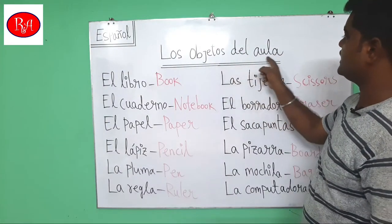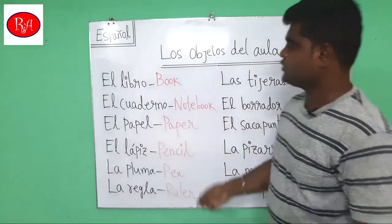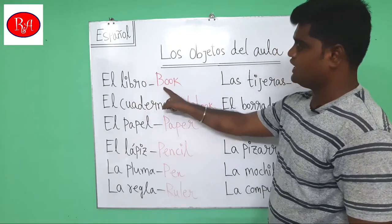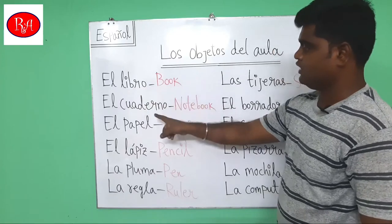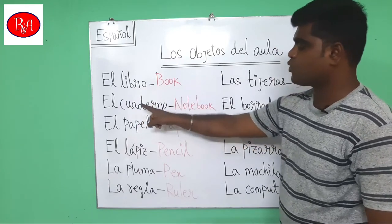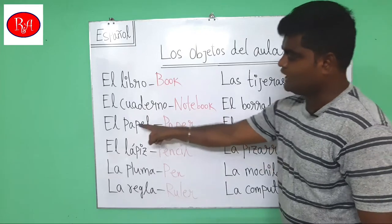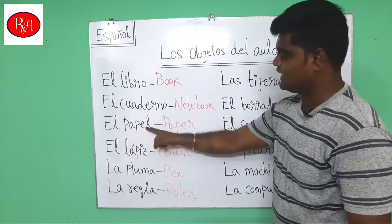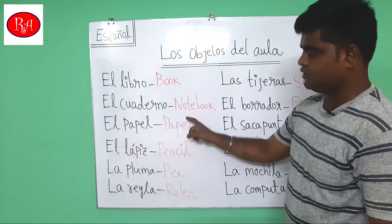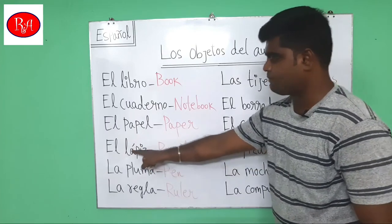Starting with el libro — that means book. El libro. Next word: el cuaderno — cuaderno means notebook. El papel — el papel — that means paper. El lápiz — lápiz with accent — that means pencil.